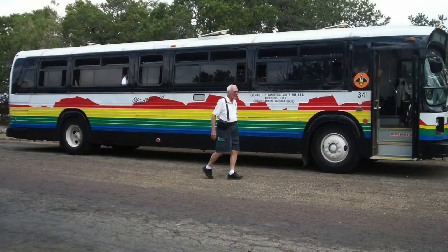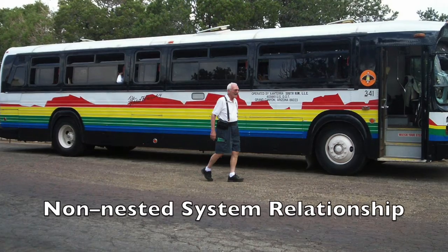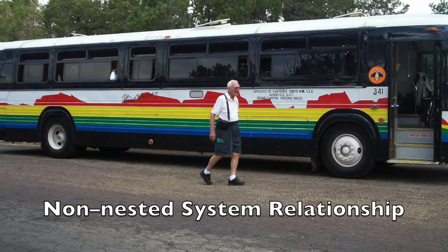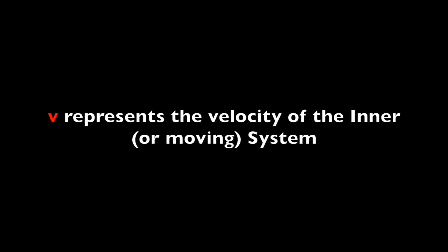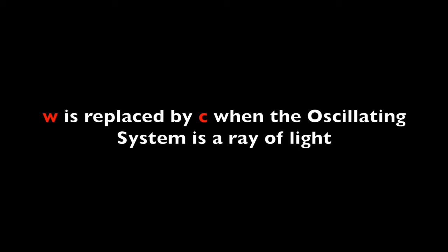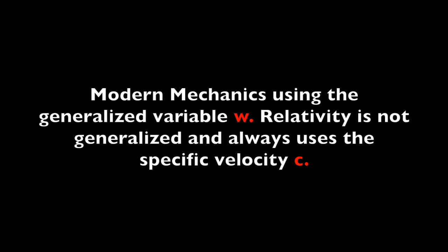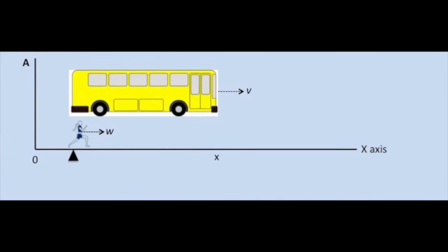With our new equations developed, let's return to our familiar non-nested system relationship involving a bus and a man, both placed on the street. Before we look at Einstein's derivation, I want to mention something important. In modern mechanics, the velocity of an oscillating system is generalized using the variable w — it can be replaced by the specific velocity of any oscillating system, such as c when working with light. Einstein does not generalize his equation and instead only uses c, the speed of light. So while I'll develop the equations using w, Einstein always uses c.